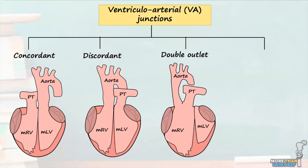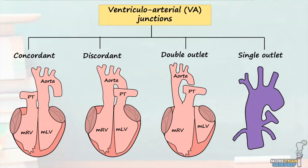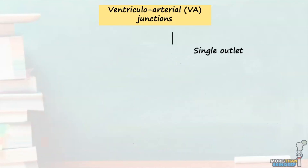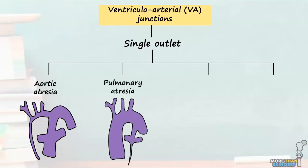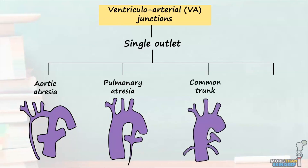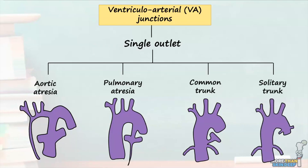The third type is double outlet ventricular arterial connections, where both the aorta and pulmonary trunk arise from the same ventricle — this can arise from the morphologically left ventricle, a right ventricle, or an indeterminate ventricle. The final type is single outlet VA connections, where there is only one main arterial trunk. This arrangement can present as one of four patterns: single outlet aortic atresia, where the pulmonary trunk is present but the aorta is atretic and underdeveloped; single outlet pulmonary atresia, where the aorta is present but the pulmonary trunk is atretic; a common arterial trunk, where blood crosses a common arterial valve to form a trunk giving rise to coronary arteries and at least one pulmonary artery branch; and a solitary trunk, where the proximal pulmonary artery is absent.